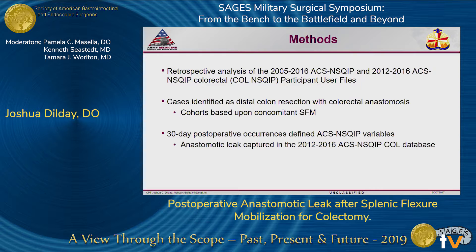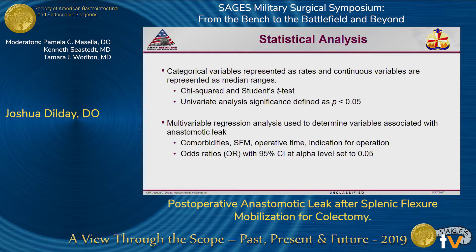We used the 2005 to 2006 ACS NISQIP database and additionally tracked patients found in the colorectal targeted database, allowing us to identify specific colorectal factors. We identified cases based on CPT codes specific for distal colon resection and colorectal anastomosis, and separated cohorts based on a concomitant CPT code for splenic flexor mobilization. Statistical analysis included chi-squared and Student's T-tests, with multivariate analysis significance set at p less than 0.05 and a confidence interval of 95%.